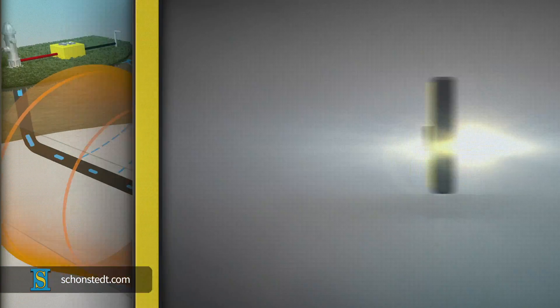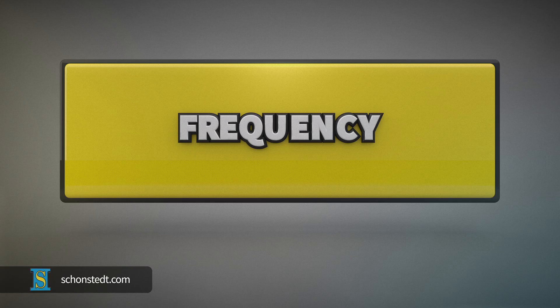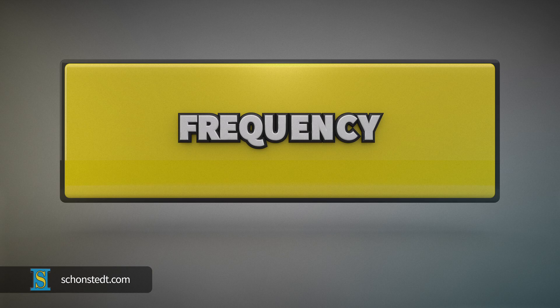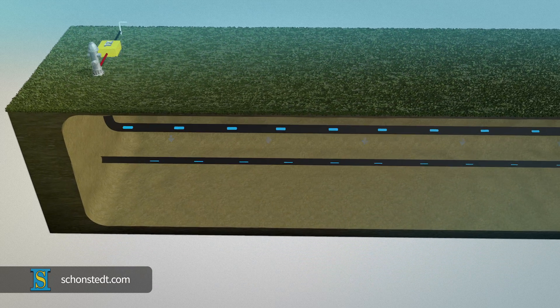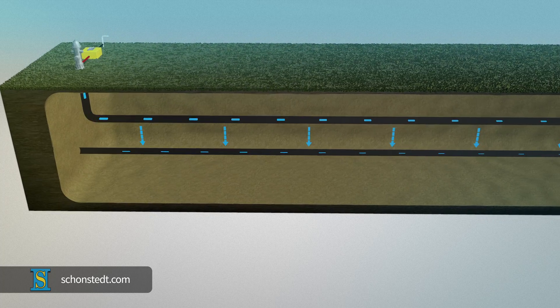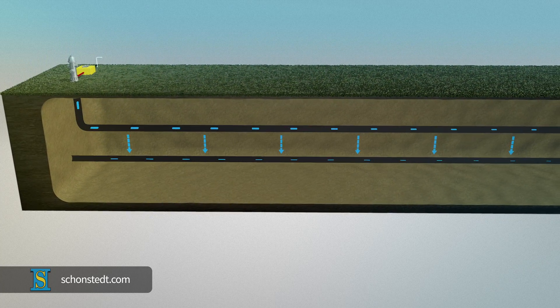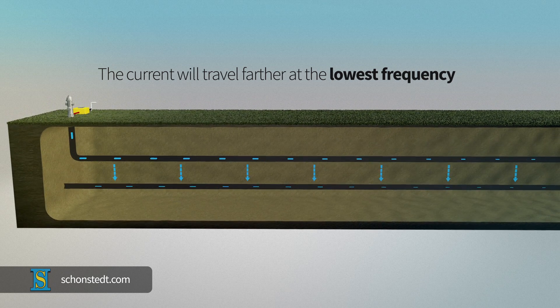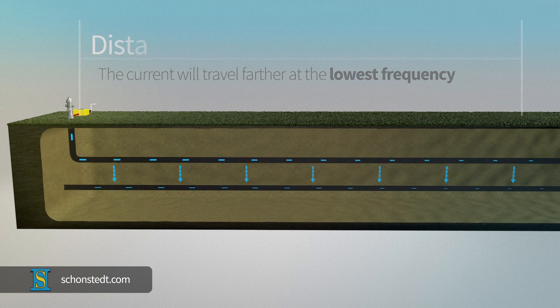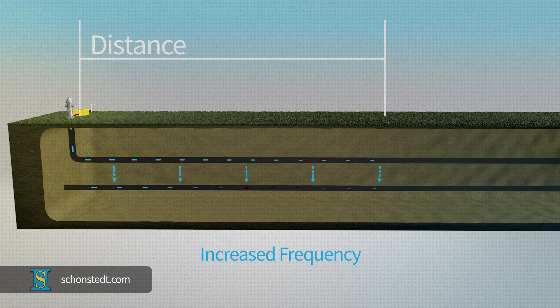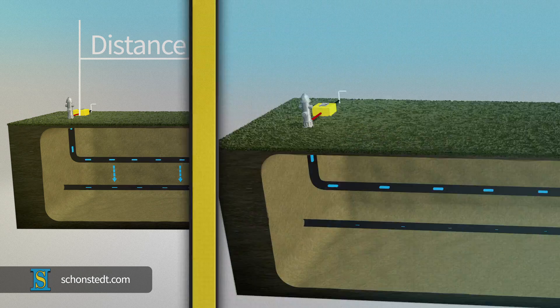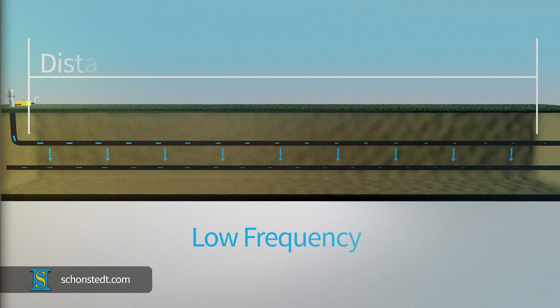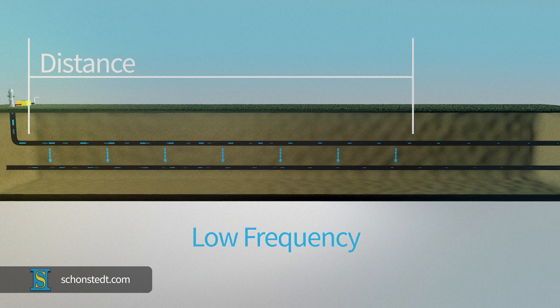One of the keys to getting a good signal is applying the proper frequency. If conditions are good—good conductor, connections, and soil conditions—the current will travel farther at the lowest frequency with less leakage to adjacent structures. An increase in frequency will cause the signal to leak sooner and cover less distance. As a rule, always start with the lowest frequency possible and increase as needed.